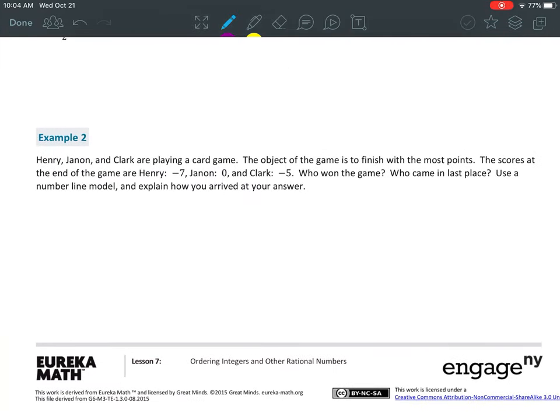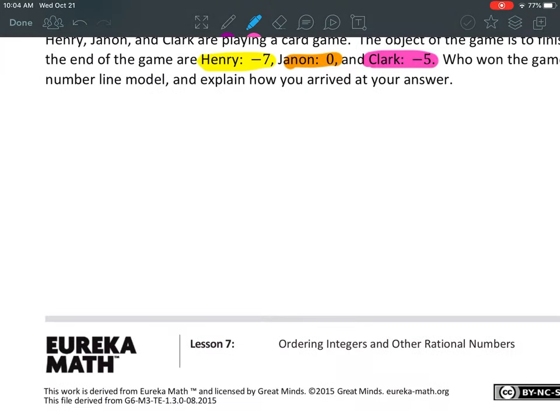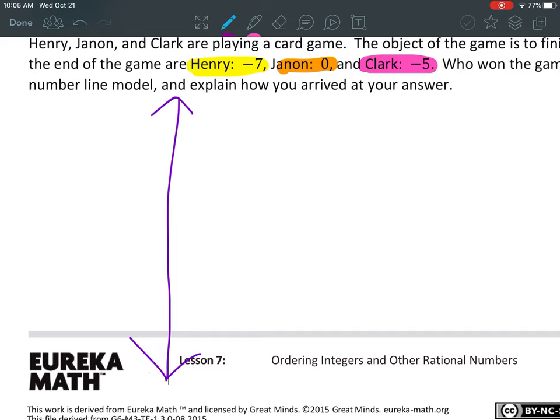Okay, example 2. Henry, Janon, and Clark are playing a card game. The object of the game is to finish with the most points. The scores at the end of the game are Henry, negative 7, Janon, 0, and Clark has a negative 5. Who won the game? Who came in last place? Use a number line model and explain how you arrived at your answer. All right, so the last one I did was horizontal. So, I'm going to do a vertical number line this time. All right, so I'm going to have my 0 be in the middle.